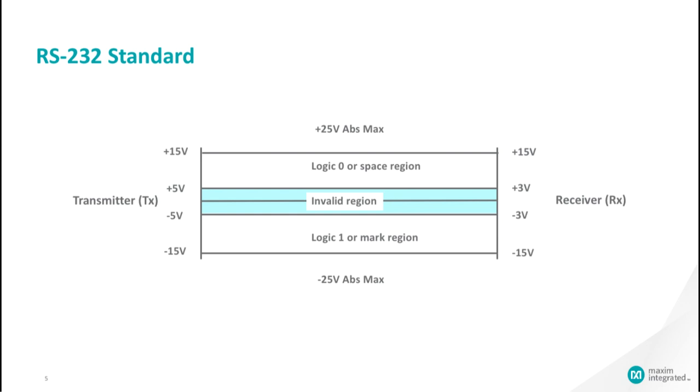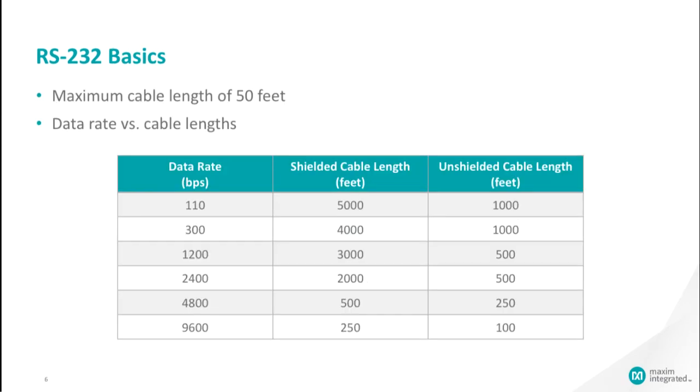In common practice, logic 0 and 1 levels are typically as low as plus or minus 5 volts and as high as plus or minus 12 or plus or minus 15 volts. The RS-232 standard defines a maximum cable length of 50 feet, but transmission has gone more than this distance with repeaters to boost the signal strength and a quality shielded cable length of up to 10,000 feet.